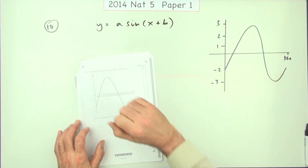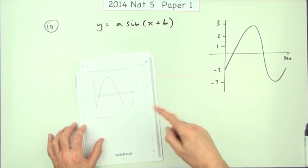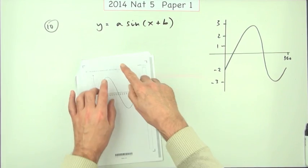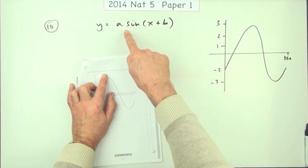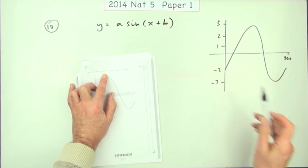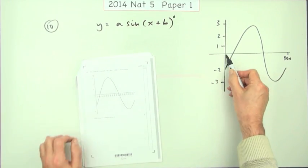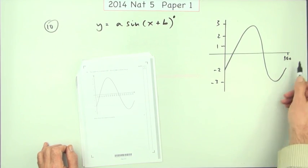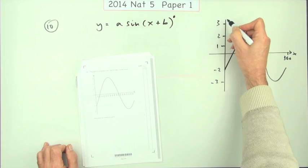Number 10 then from the first paper of the 2014 National 5, what have we got? One of these trig graphs, in fact it tells you. Here's a graph of a sine x plus b degrees. Now I've not put these numbers in here yet, well apart from that one at the end, that was x, that was y.